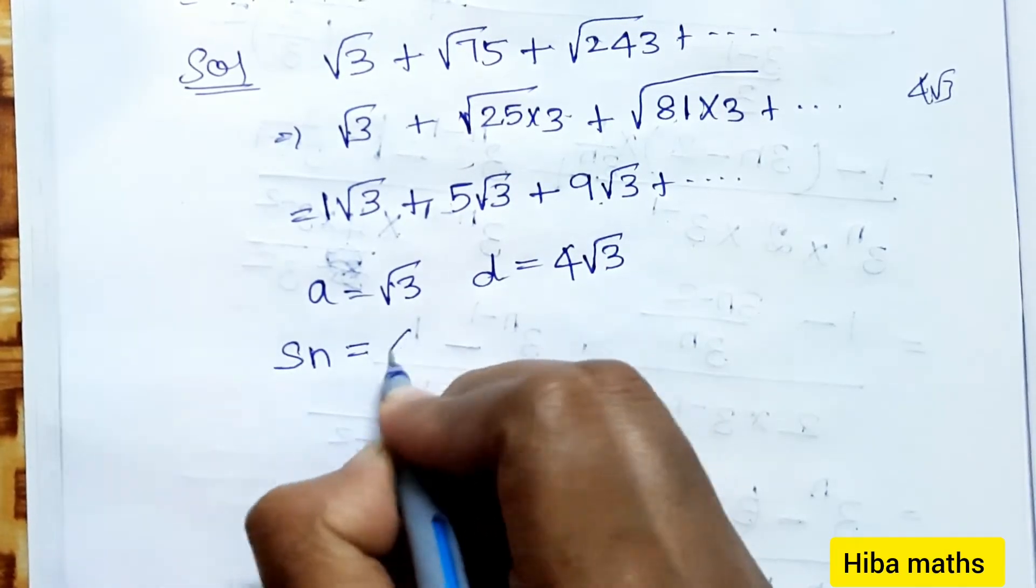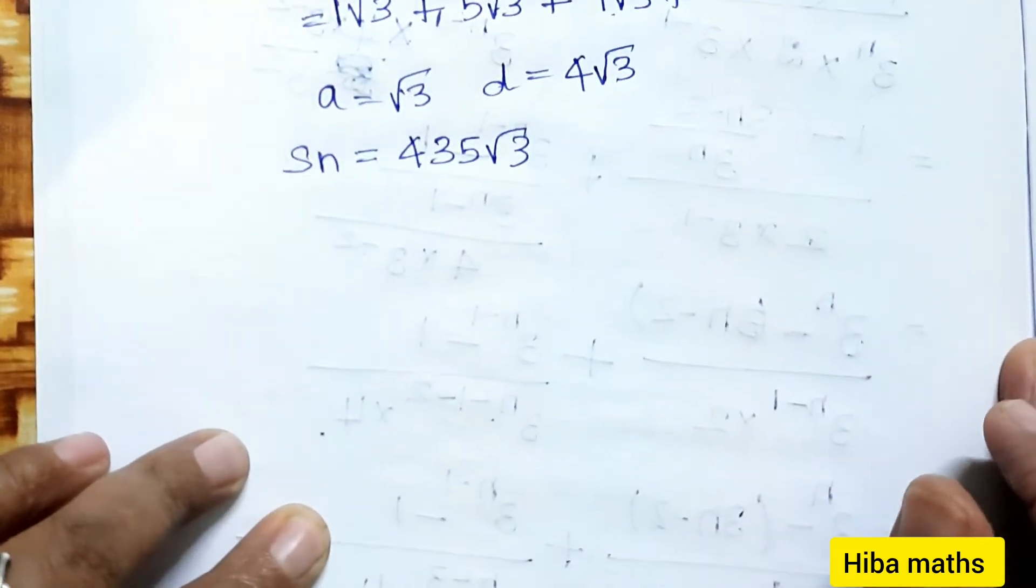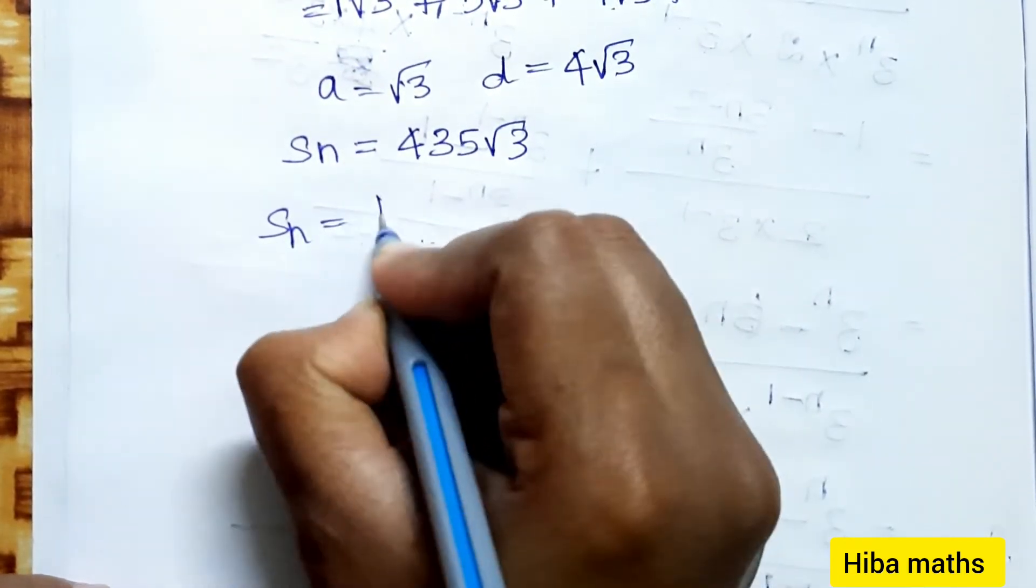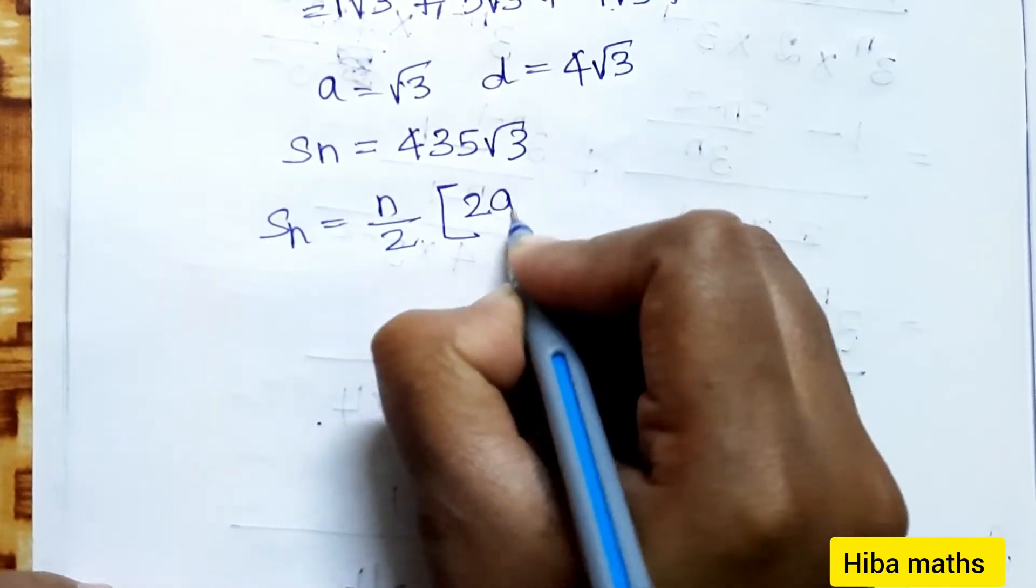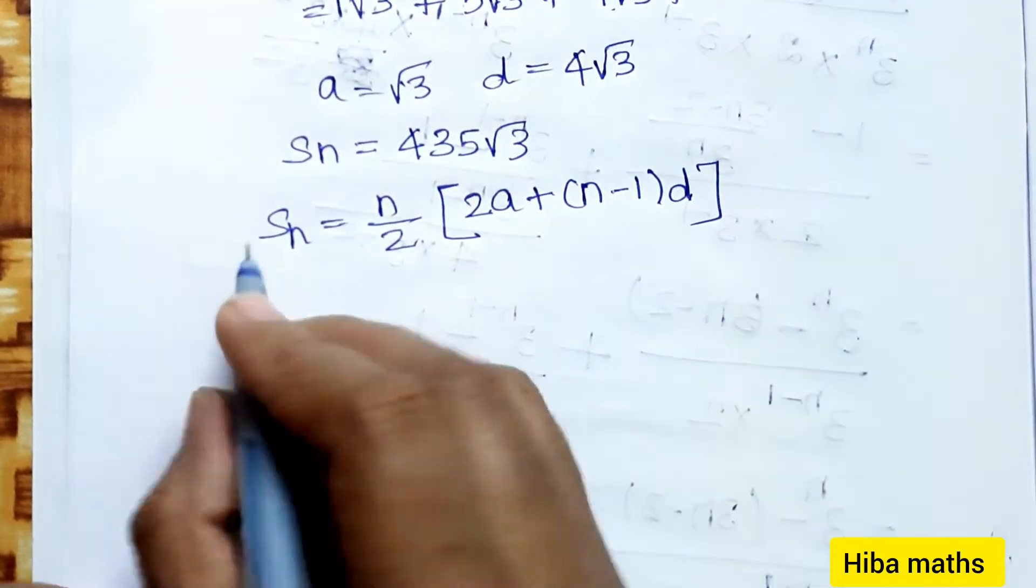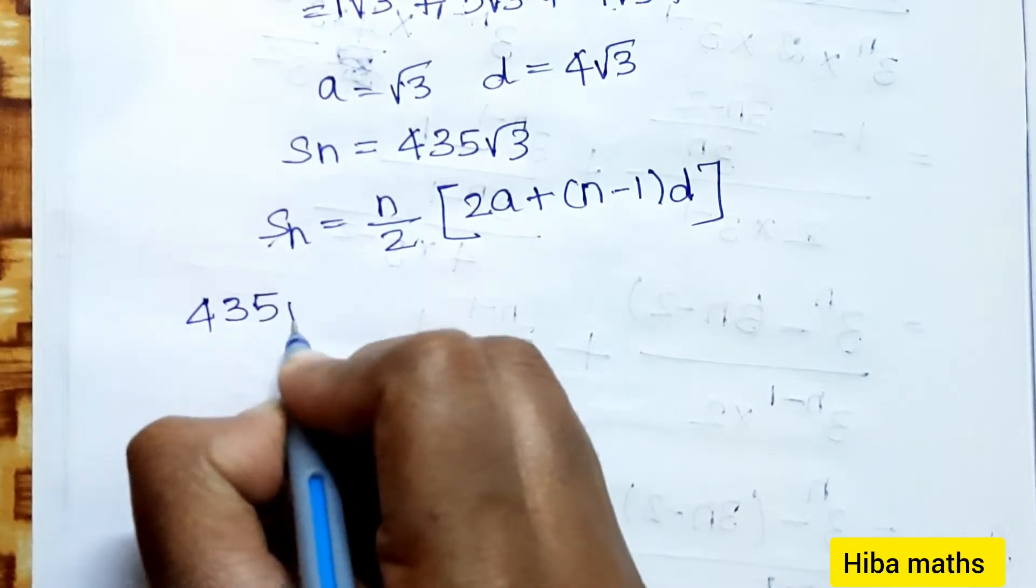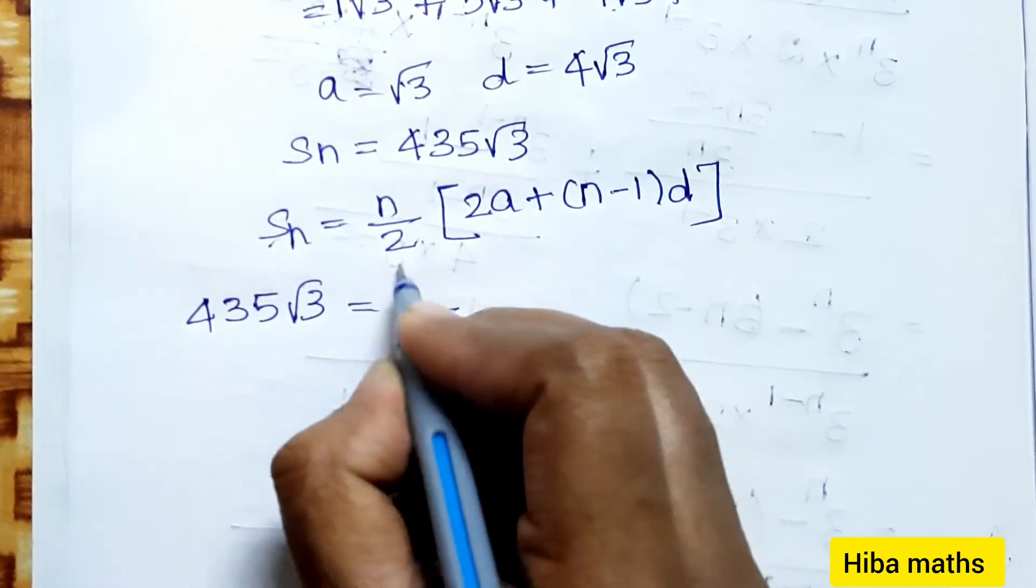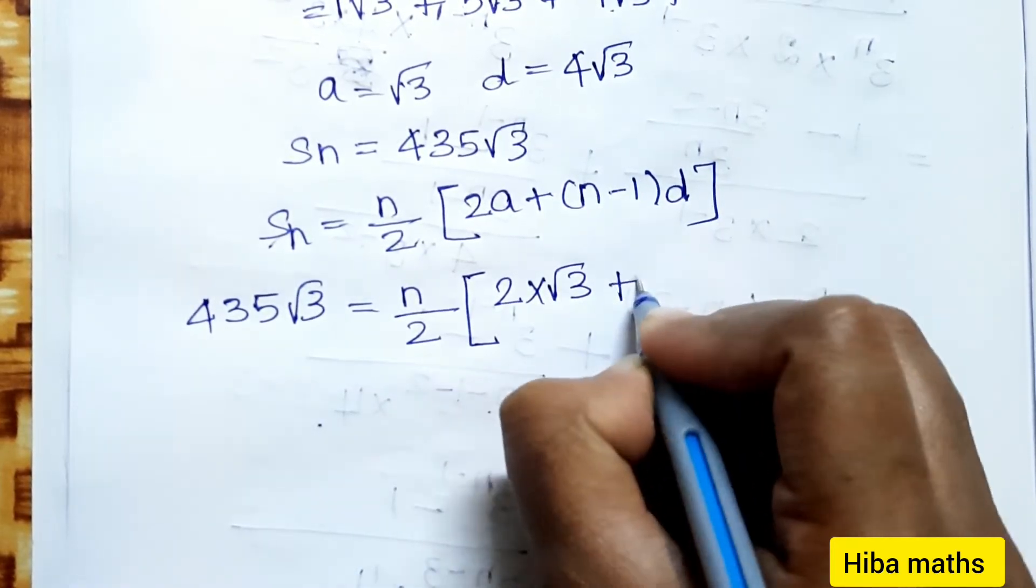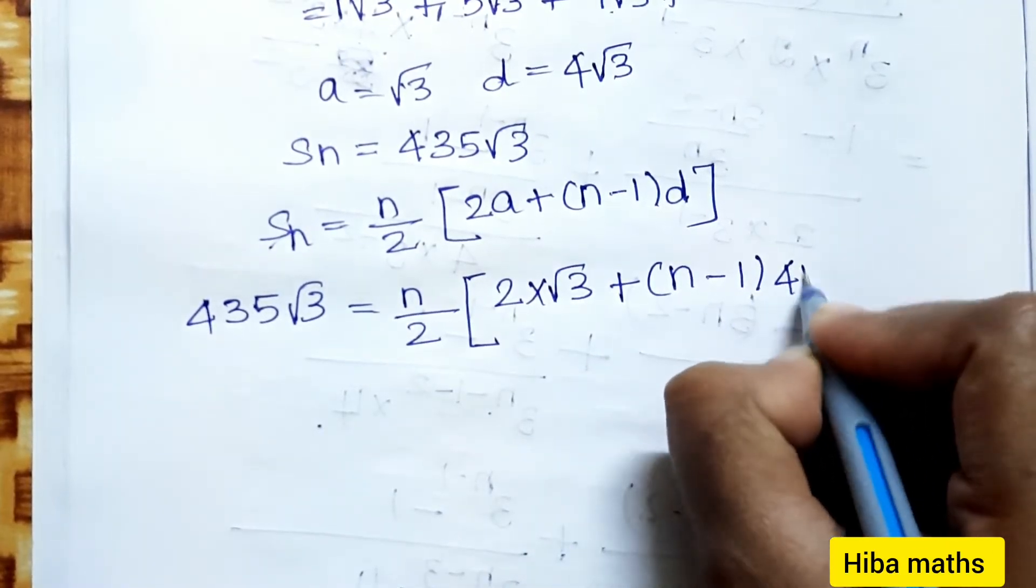S_n value is 435√3. Now substitute in the S_n formula: S_n = n/2[2a + (n-1)d]. So 435√3 = n/2[2×√3 + (n-1)×4√3].